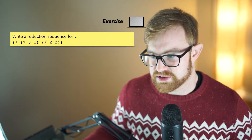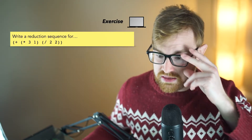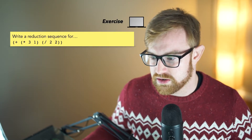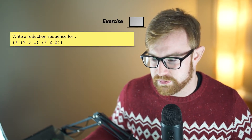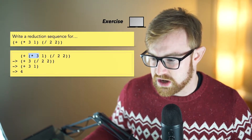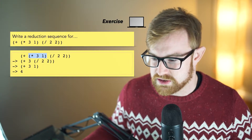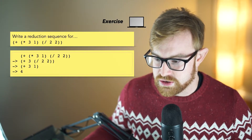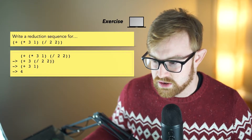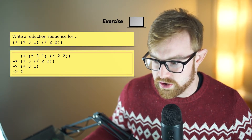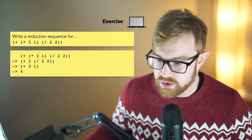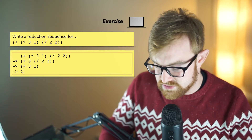Let's look at another reduction sequence: 3 times 1 plus 2 divided by 2. We're going to do first 3 times 1, since it's in the leftmost position. And then we're going to have 3 — no more work needed there. But then we're going to do 2 divided by 2, materializing that to just 1. And then we've got our entire value: 3 plus 1, which is then going to be written to 4. And this is a value.